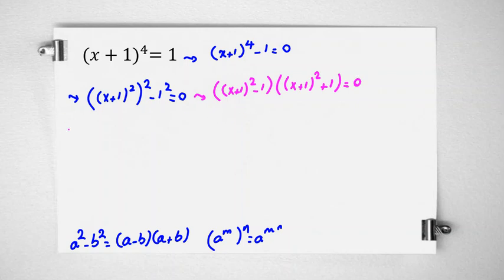Now in the next step, we can say this part is subtraction of 2 perfect squares. We can say it equals x plus 1 minus 1 times x plus 1 plus 1 times... This part is what? x plus 1 squared.